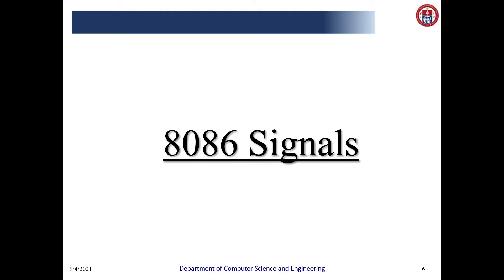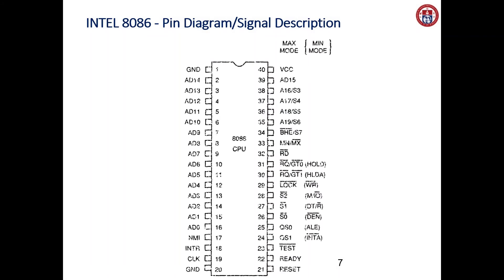In this video I am going to explain the various signals used in the 8086 microprocessor. Totally there are 40 signals available in the 8086 pin diagram, and we are going to see them one by one. This is the pin diagram — as I mentioned, there are 40 pins available in the 8086 microprocessor.